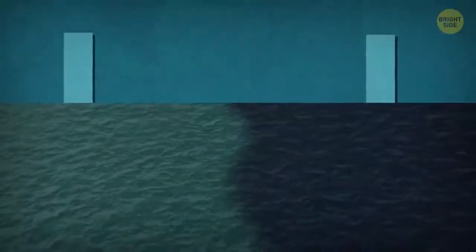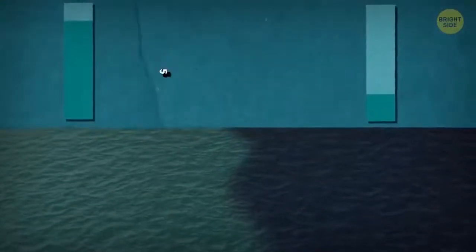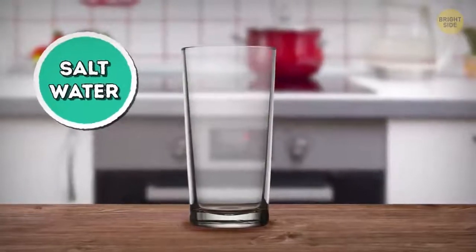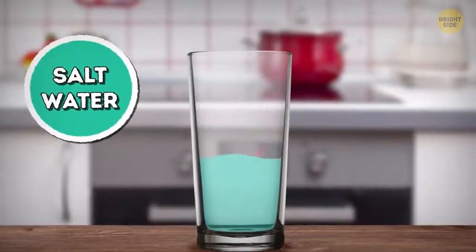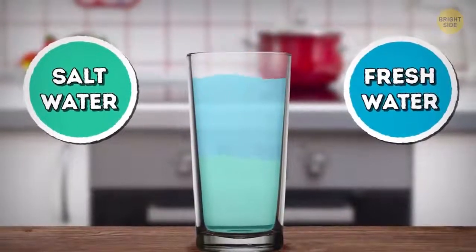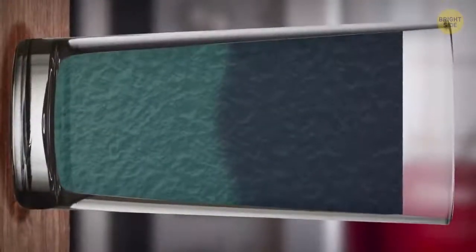Haloclines appear when the water in one ocean or sea is at least five times saltier than in the other. You can create a halocline at home if you pour some seawater or colored salty water in a glass and then add some fresh water on top of it. The only difference is that your halocline will be horizontal, and ocean haloclines are vertical.